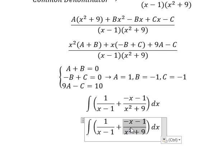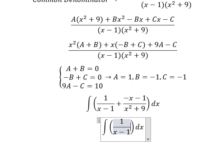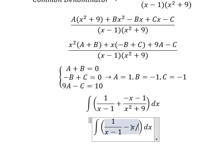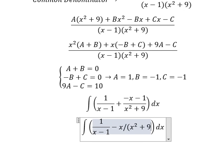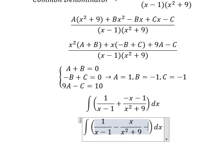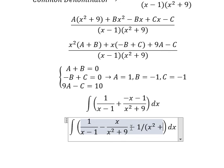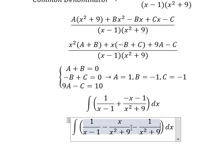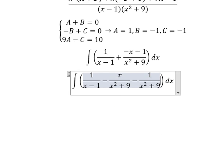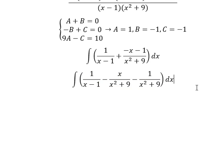So the decomposed expression gives us negative s over (s squared plus 9), minus 1 over (s squared plus 9). And now we have the final partial fraction form.